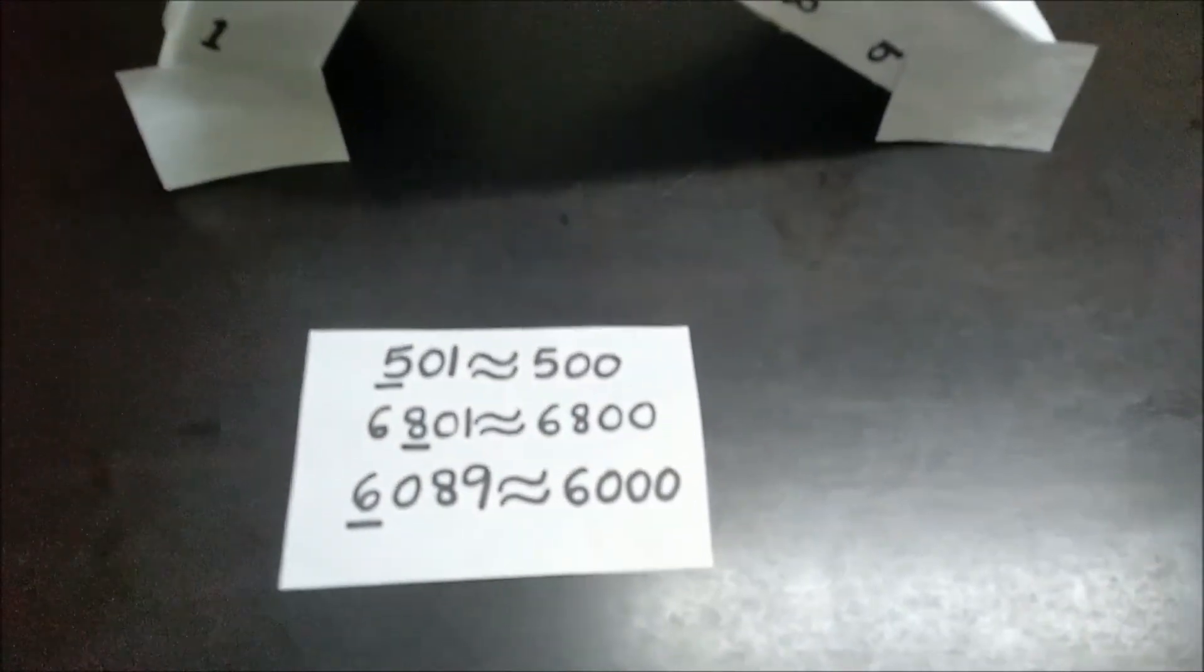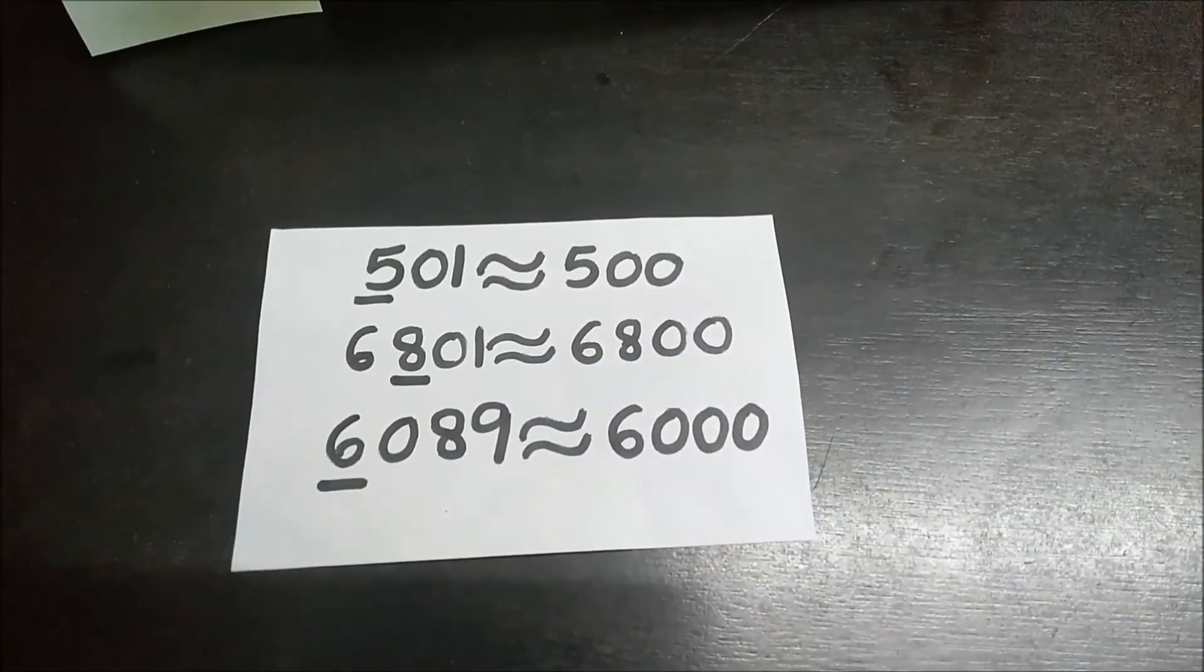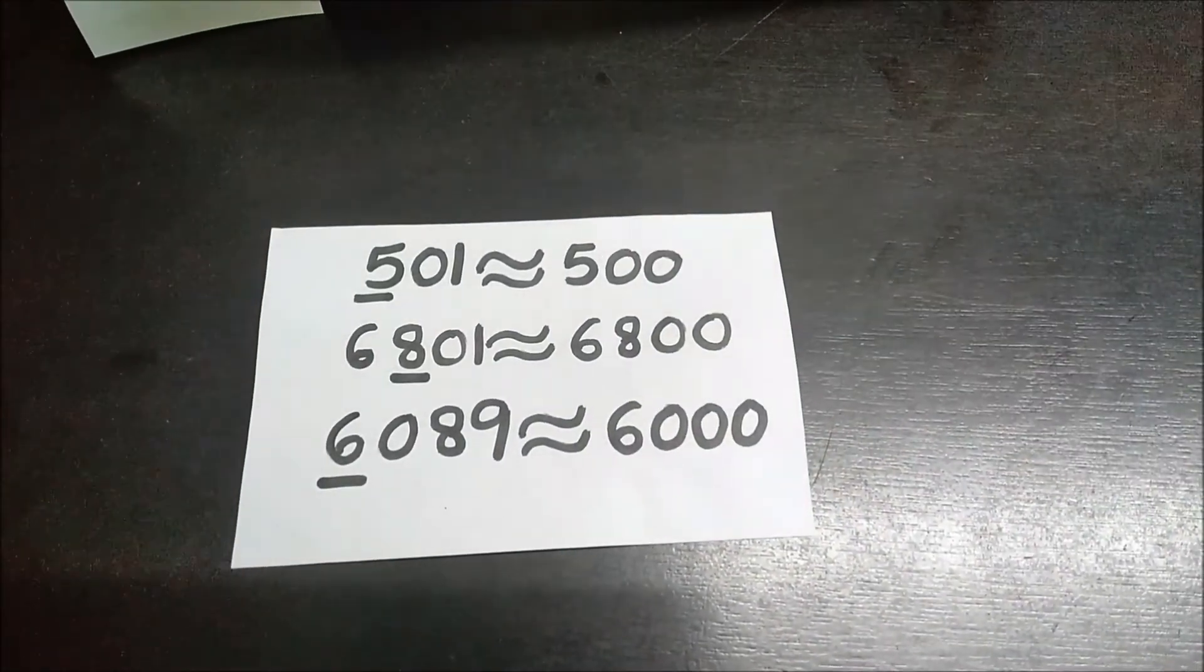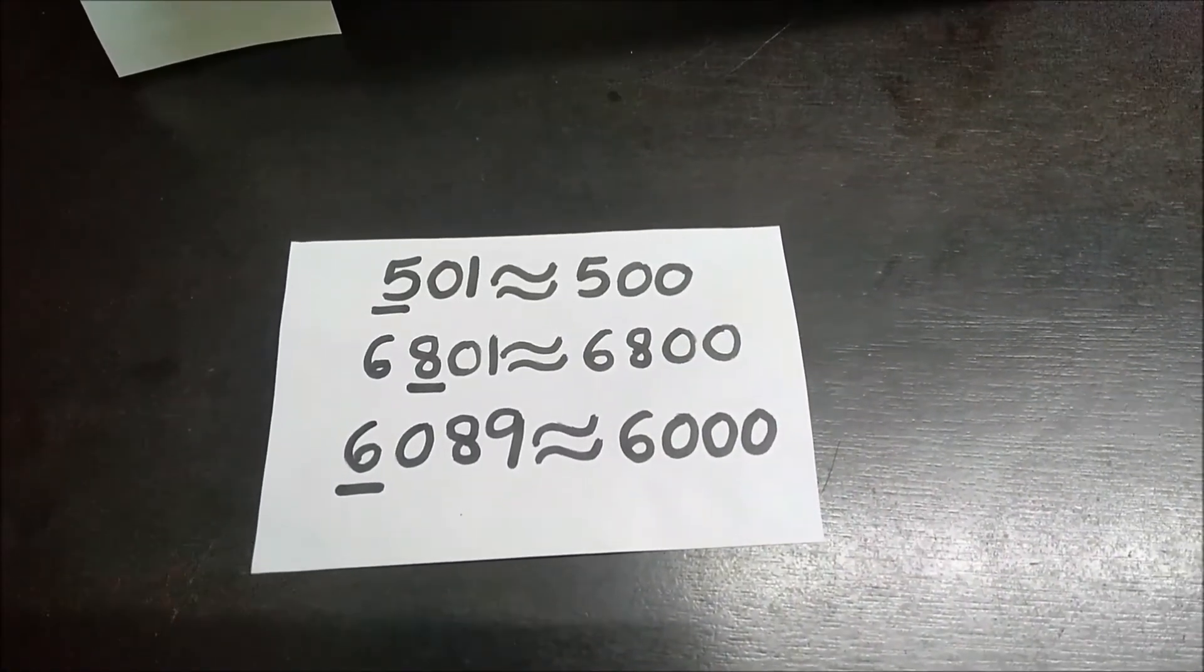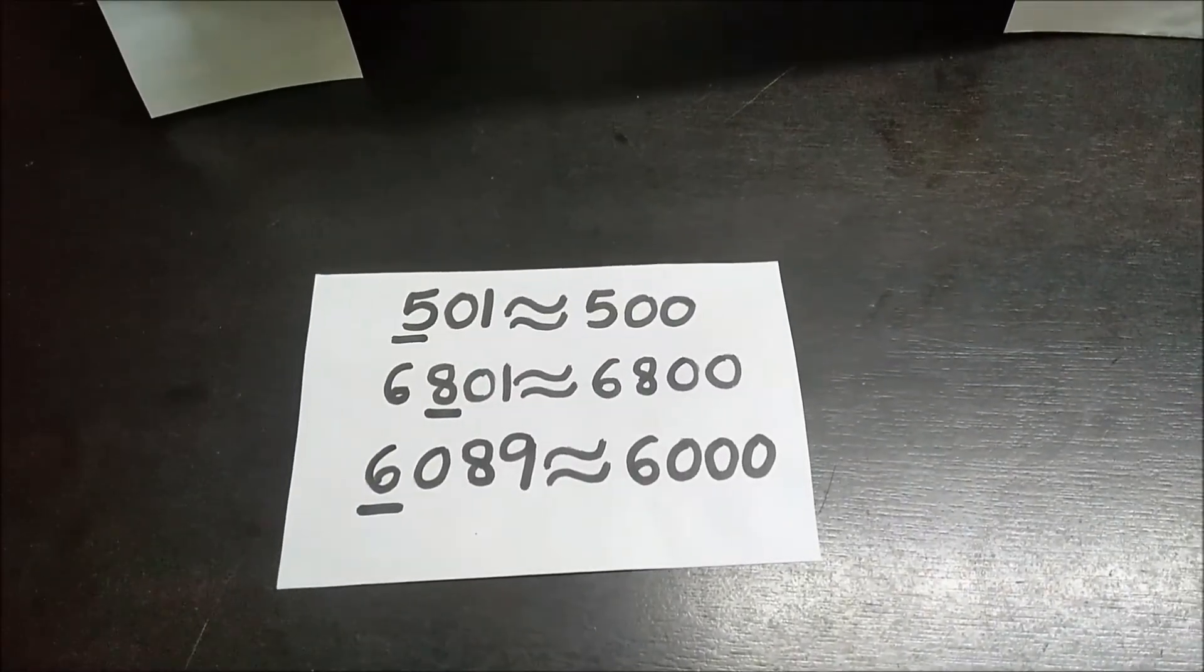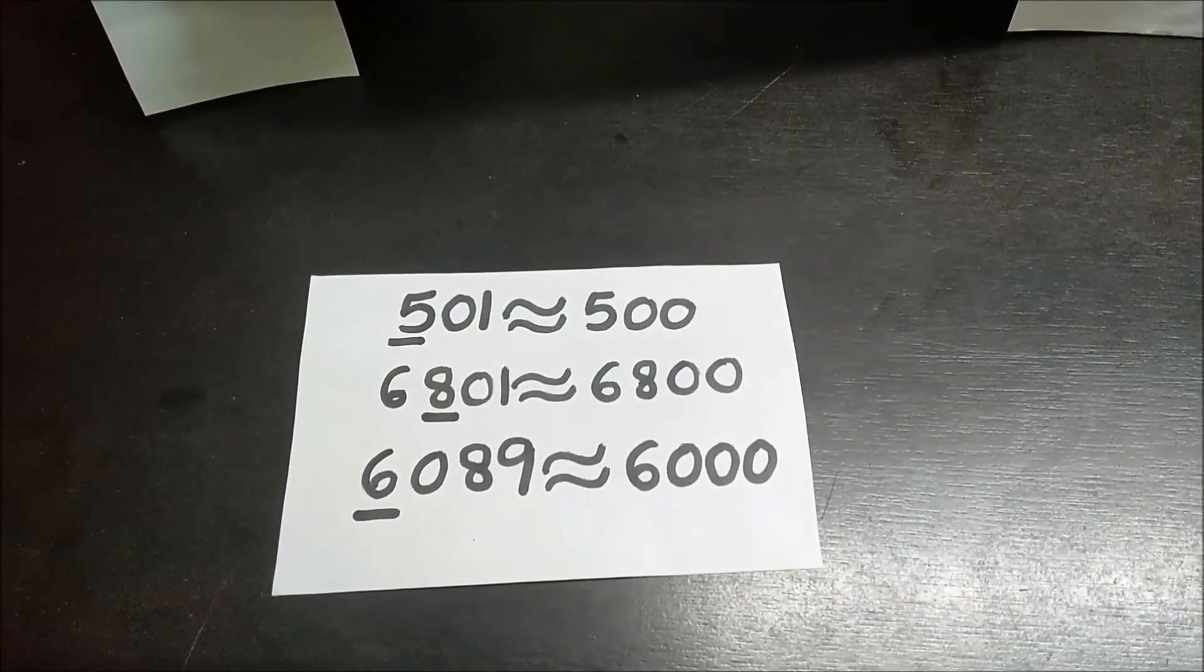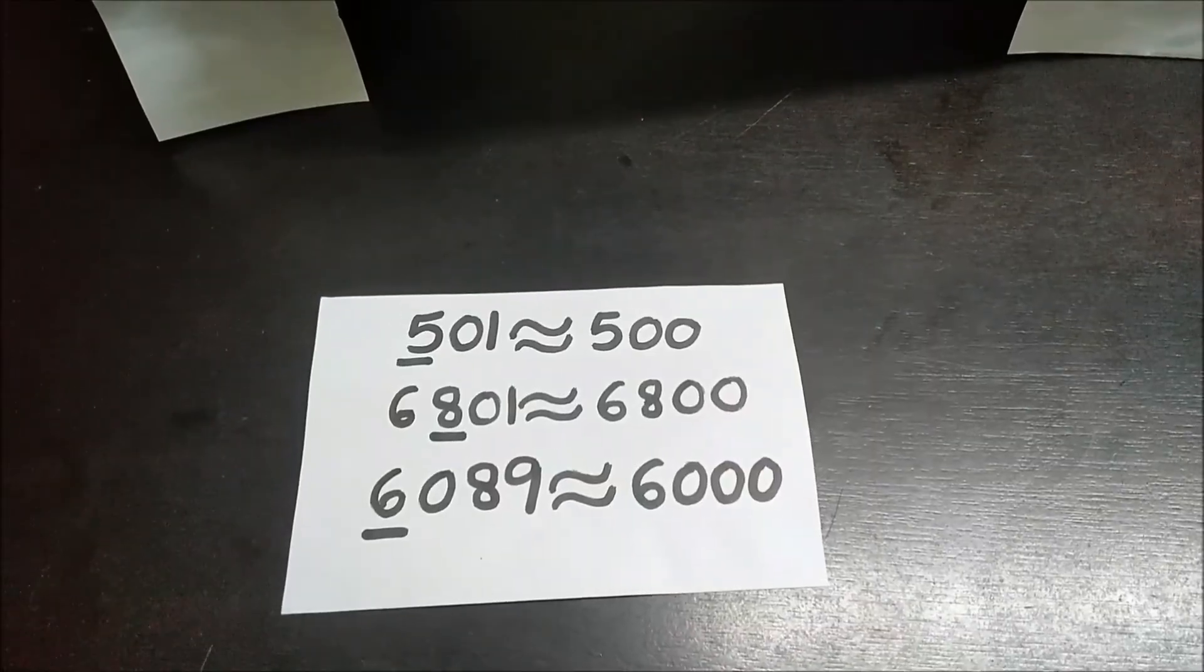For example, when we round off 501 to the nearest hundreds, we get 500. When we round off 6801 to the nearest hundreds, we get 6800. When we round off 6,089 to the nearest thousands, we get 6,000. No change in the underlined digits.